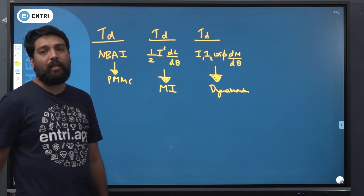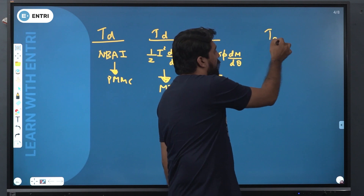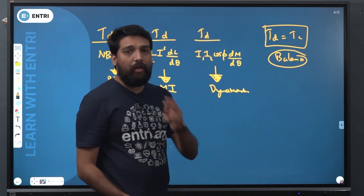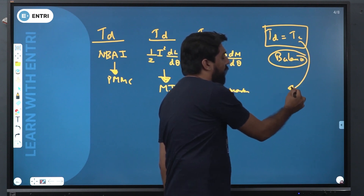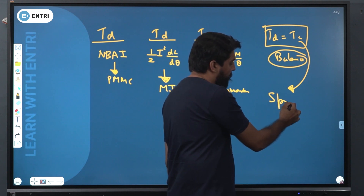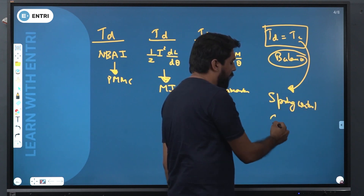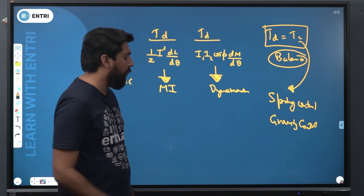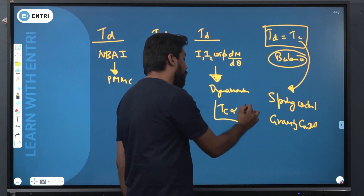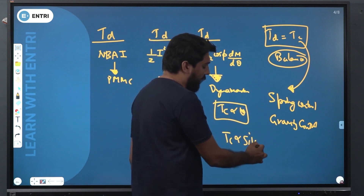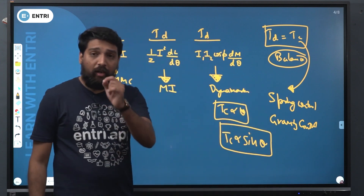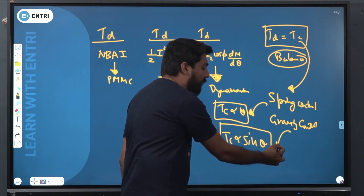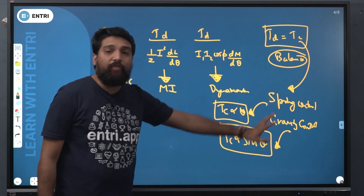Controlling torque is equal to the deflection torque — this is the balance condition. Controlling torque is defined by two methods. In spring control, controlling torque is directly proportional to theta. In gravity control, controlling torque is directly proportional to sine theta.